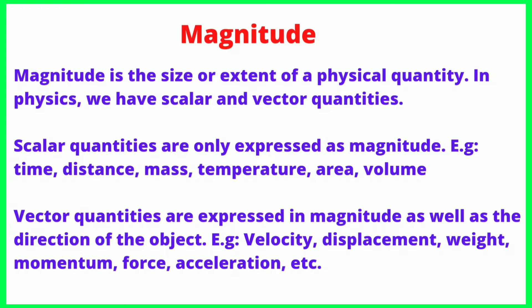Scalar quantities are expressed as magnitude only — examples include: time, distance, mass, temperature, area, and volume. Vector quantities include: velocity, displacement, weight, momentum, force, and concentration. All of these are vector quantities because they involve direction.